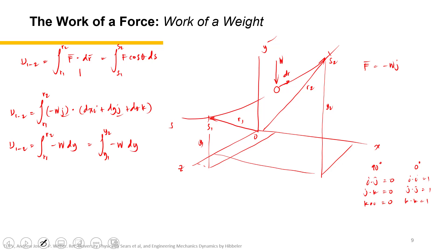Negative W dy. So finally we have negative W delta y. So this is the work of the weight: it is negative W delta y.